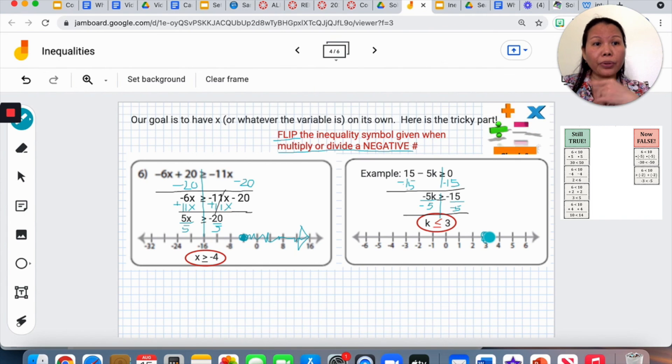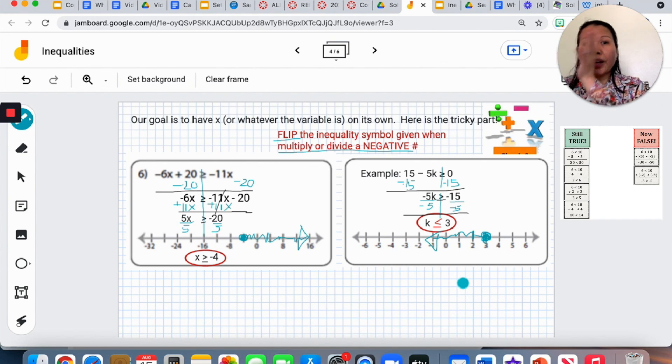And it's less than or equal to. So less will go to the left. The answer is 3, 2, 1, 0, negative 1, negative 2, and so on.